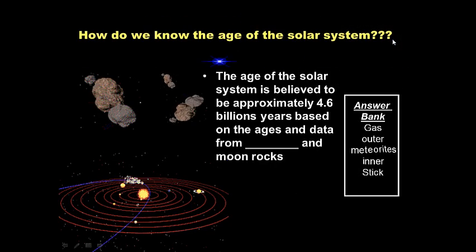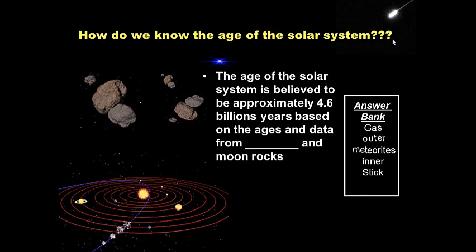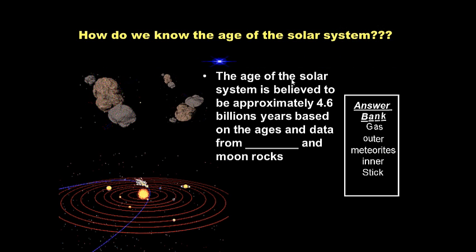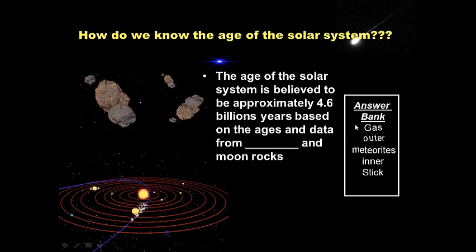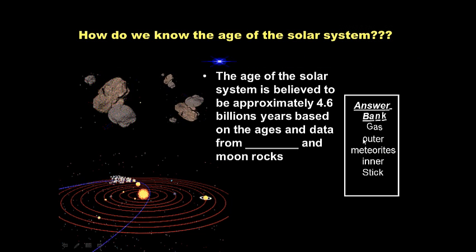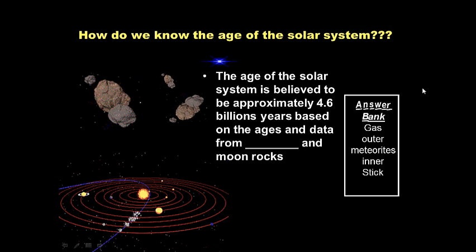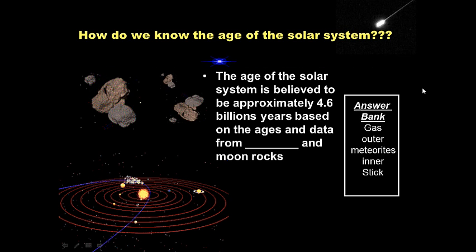So last one for today is how do we know the age of the solar system? Write this down. Read the sentence and determine which word best completes the sentence by using the answer bank. That should be word number six there hopefully. Go ahead and pause it.